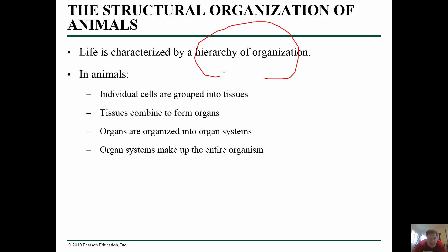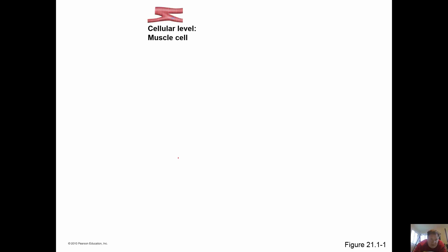We've talked about this hierarchy of organization in life, and in animals we still have this organization. In living animals, individual cells are grouped up into tissues — we saw that in plants as well. These tissues combine to form organs, and these organs are organized into organ systems, which make up the entire organism.